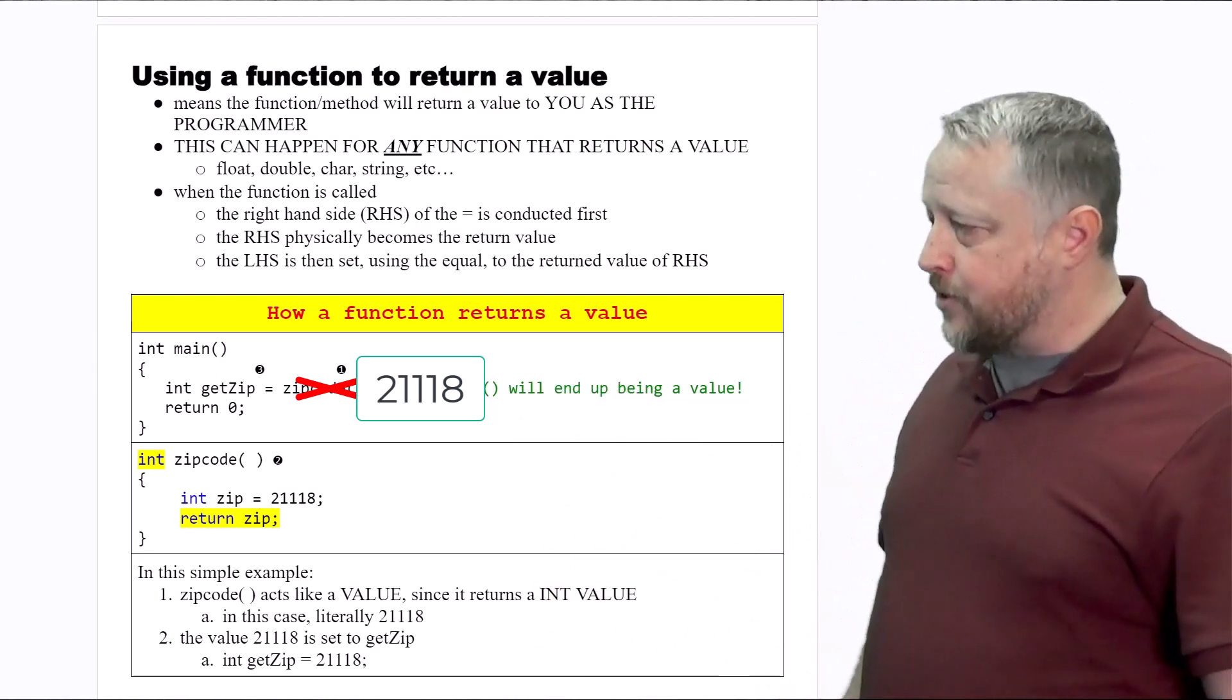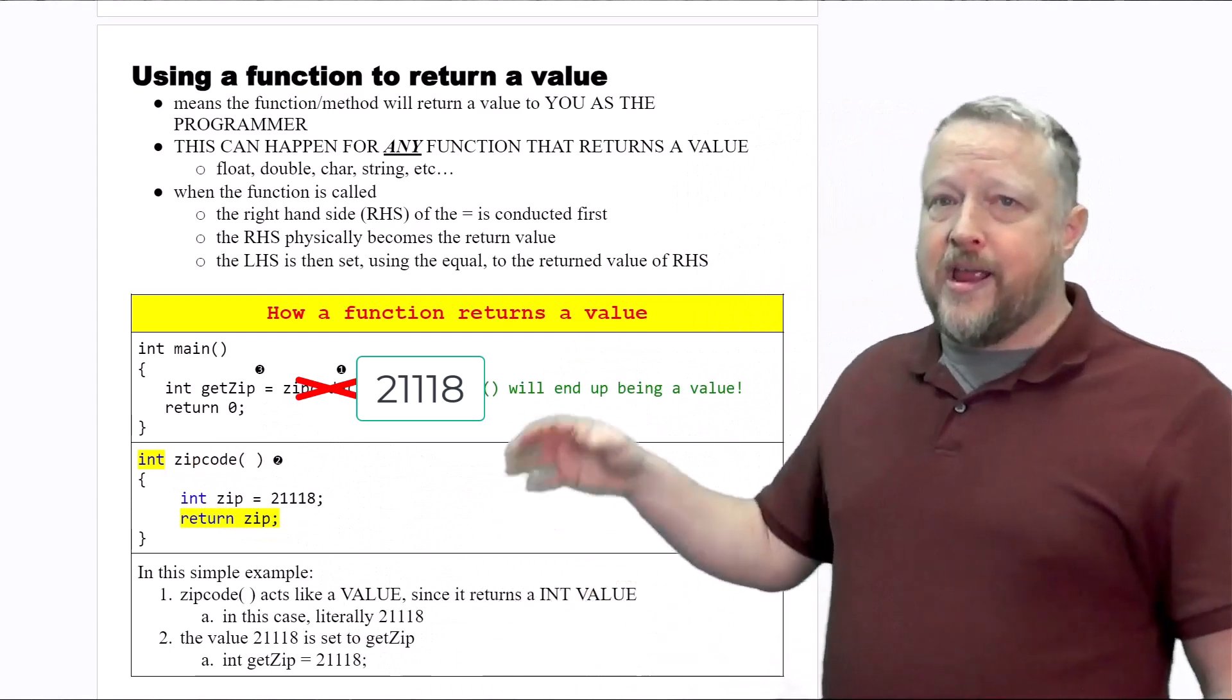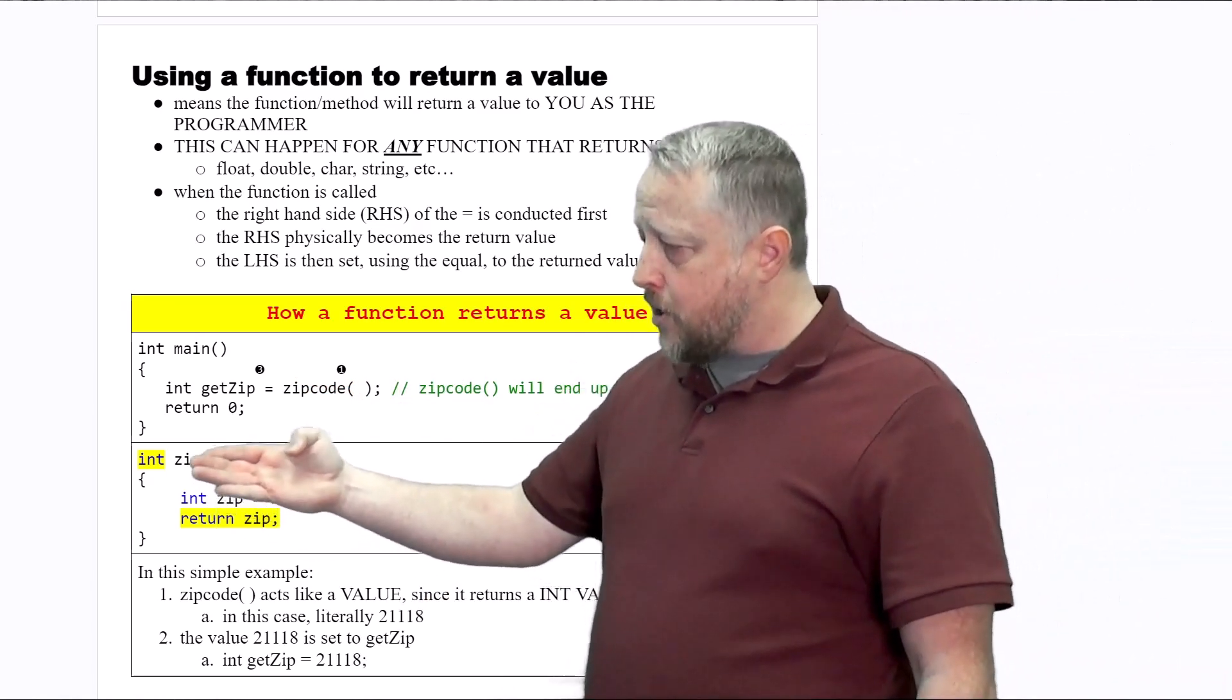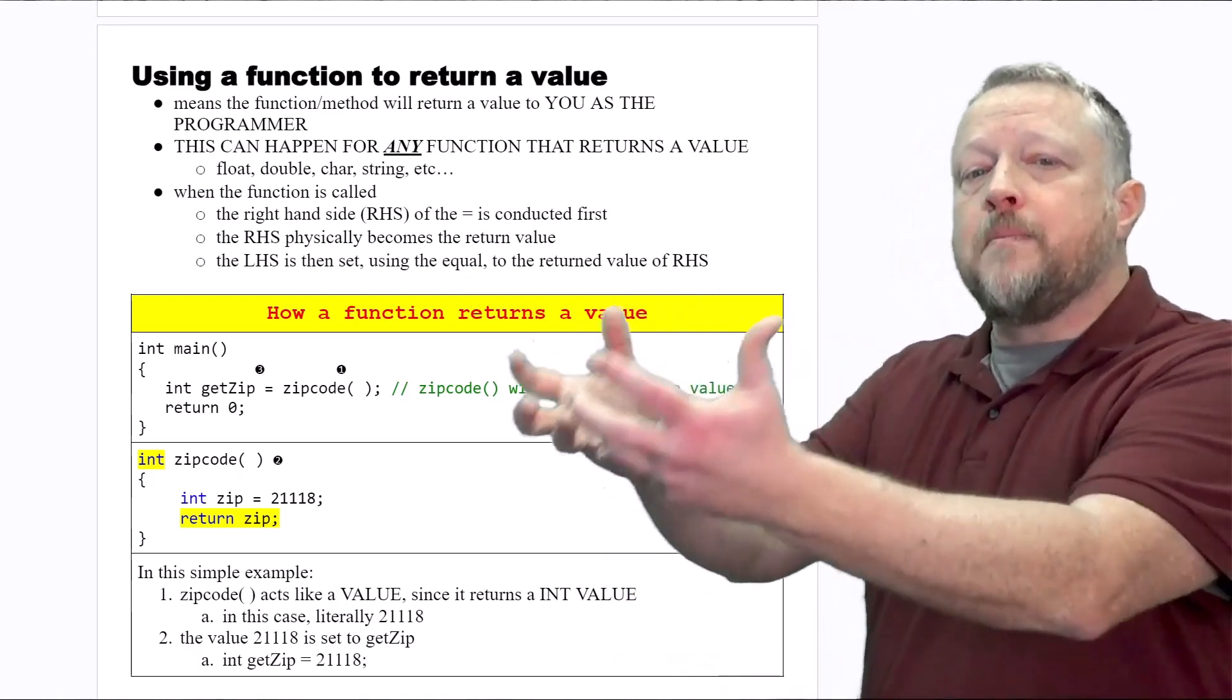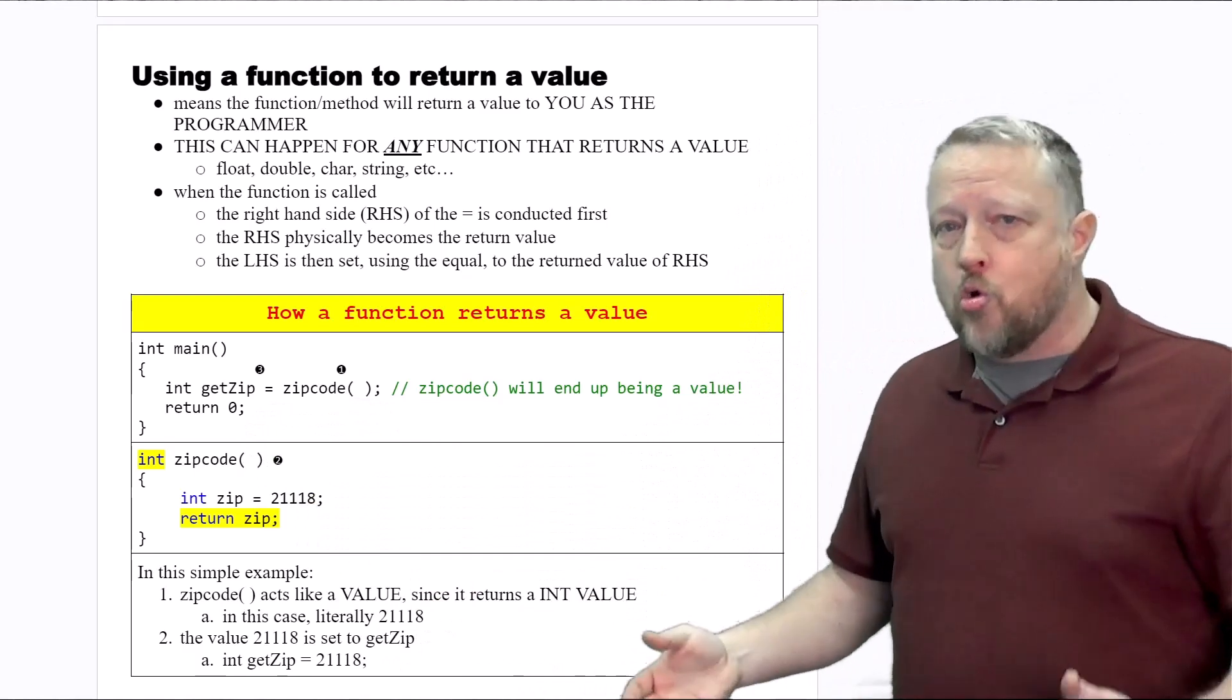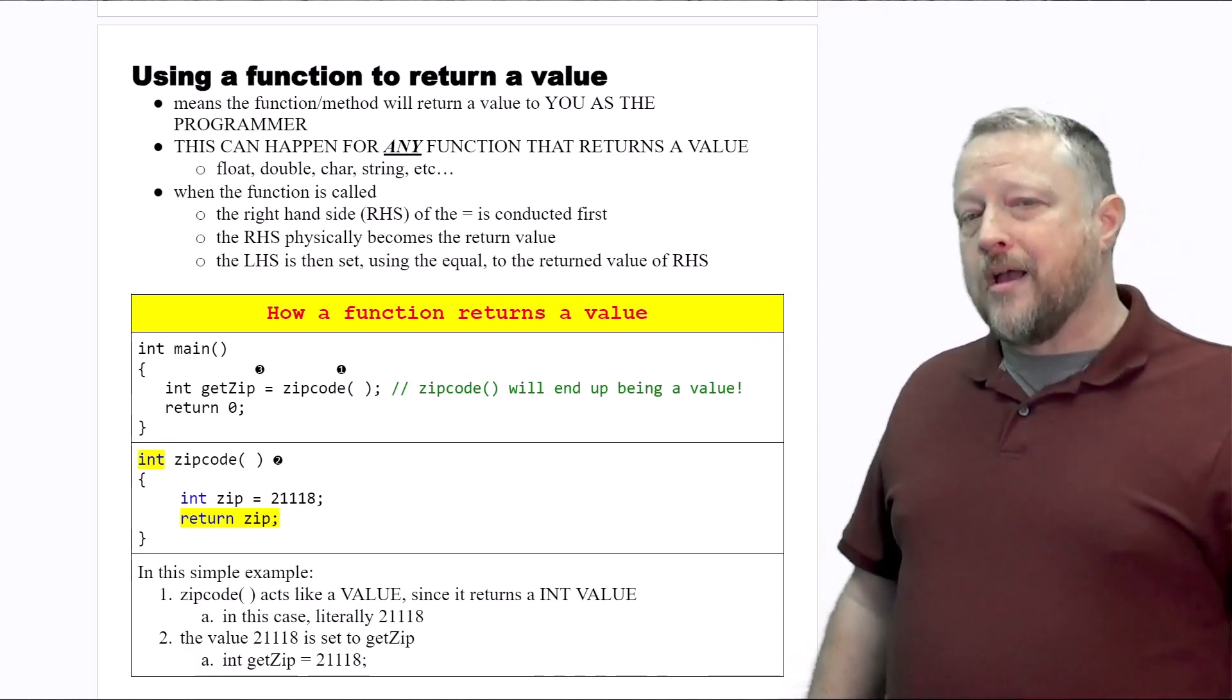21118 will then get dropped into getZip. By the way, we can return any data type that we want—float, doubles, strings, other objects. You're going to start seeing some functions that return different things other than integers, because that's them doing the work and then presenting back to you the programmer some material that you're going to need to use later on. That's what using a function to return a value can do for you in helping you organize and compartmentalize your algorithms.